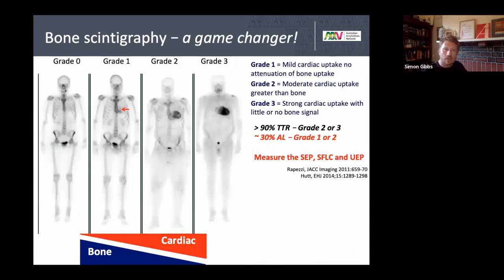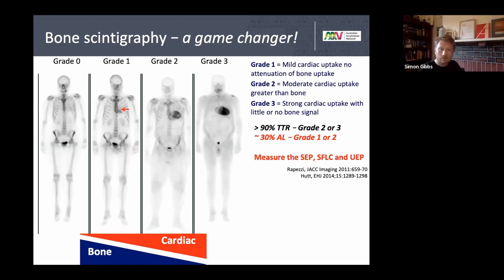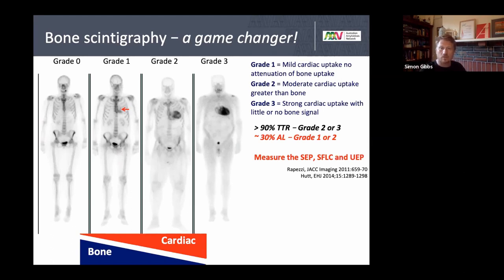The game changer has been bone scintigraphy. About 30 years ago, a group of Norwegians doing bone scans on older male patients with prostate cancer found that in a small percentage, their hearts lit up like Christmas trees. Biopsies proved this was due to amyloid, and it was increasingly recognized as a highly sensitive way of picking up cardiac amyloidosis. There are three tracers that can be used: DPD, PYP — which is most commonly used in Melbourne — and HMDP. DPD probably gives the best pictures but is harder to obtain.